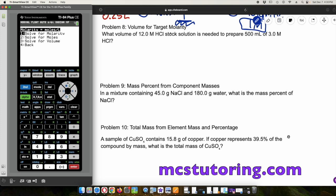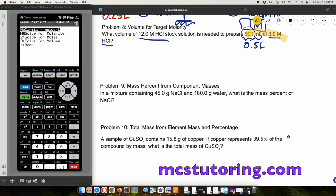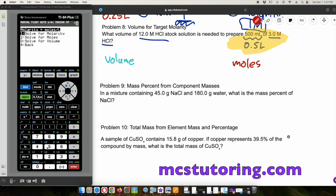Question eight, volume for target molarity. What volume of 12 molarity hydrochloric acid stock solution is needed to prepare 500 milliliters of a three molarity HCl? So this is going to be a two-step problem as well. First thing we have to do is find out how many moles we actually have. So that's the first part. And the second thing is going to be the volume.